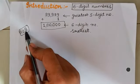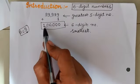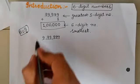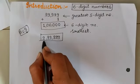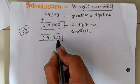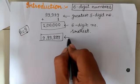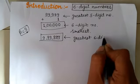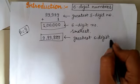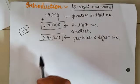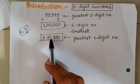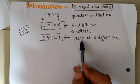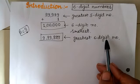Now, from 0 to 9, 9 is the greatest number. So in all 6 positions we will put 9. Then the number becomes 9,99,999. This will become the greatest 6-digit number. 1, 2, 3, 4, 5, 6 — so this is the 6-digit number which has the greatest value among the group of 6-digit numbers.